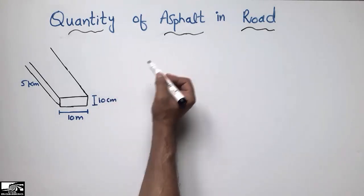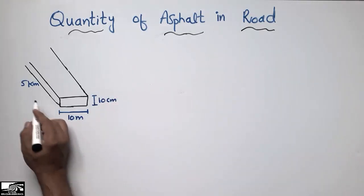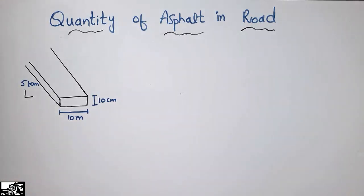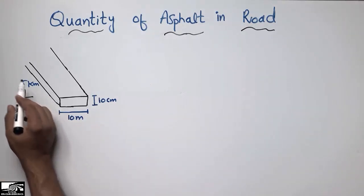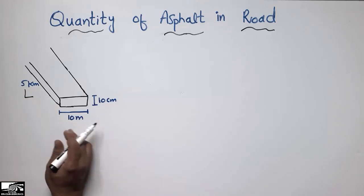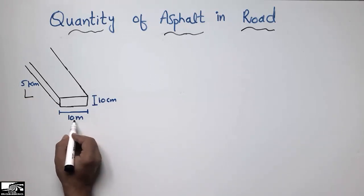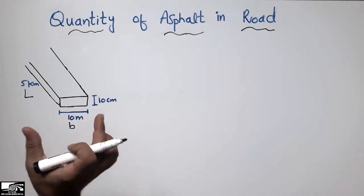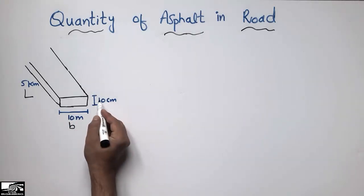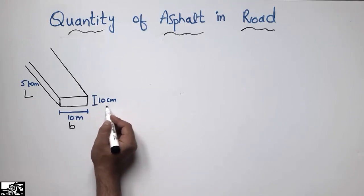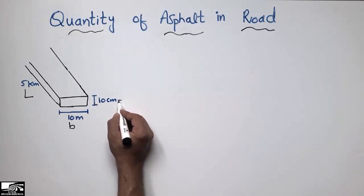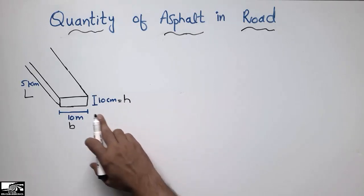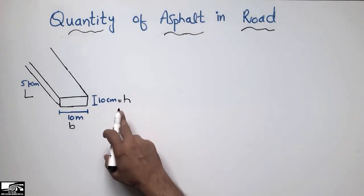I'm going to calculate the quantity of asphalt for this road. These are the road dimensions: the length L is 5 kilometers, the width B is 10 meters, and the height H is 10 centimeters.